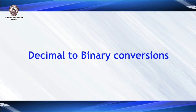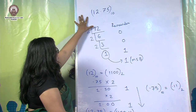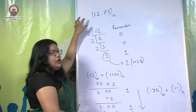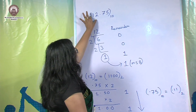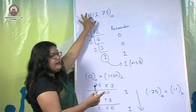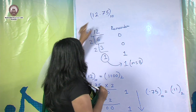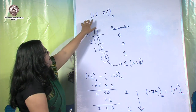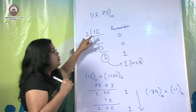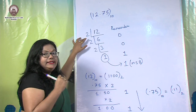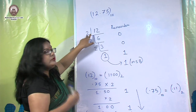Now we will see how to convert a decimal number to its binary equivalent. We have taken a fractional number as an example, so we first convert the integer part 12 to binary. For 12, we repeatedly divide by 2, because 2 is the base of the binary number system. We keep dividing until we can no longer divide.